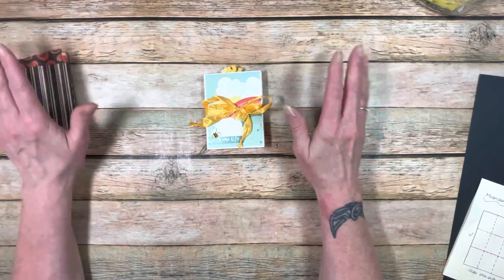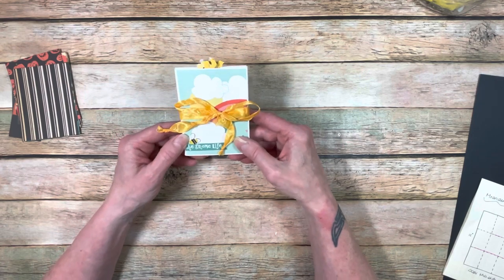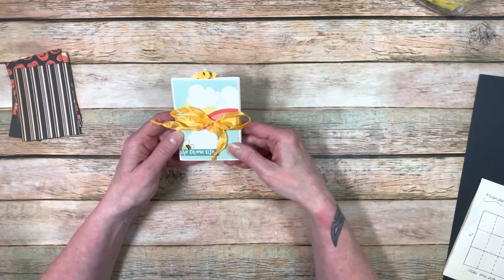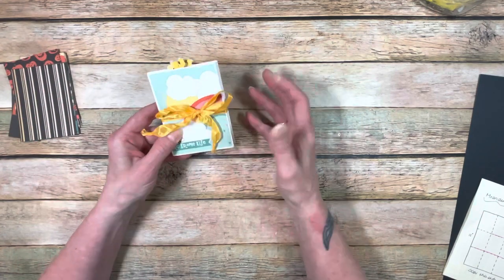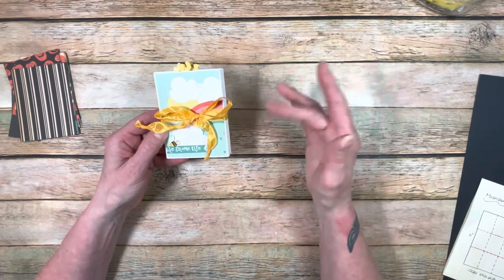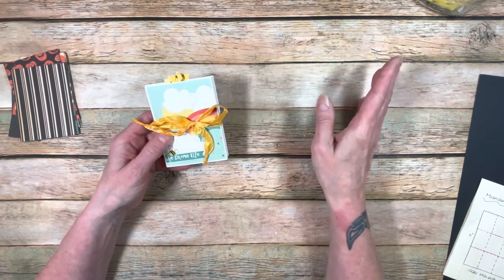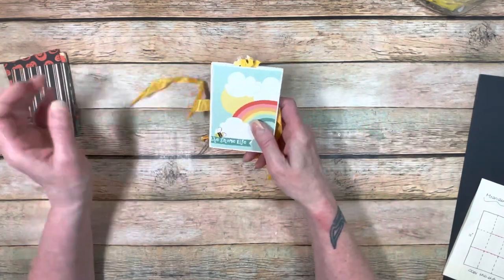Again, these are past design team packages. I don't believe they're available anymore at Country Craft Creations, but you can use anything you have left over from your stash. So let's go through a meander book. Basically this is a one sheet kind of thing. You take a 12 by 12, you score it, you cut it in certain spots, and you've got a book. You just have to do a little simple gluing.